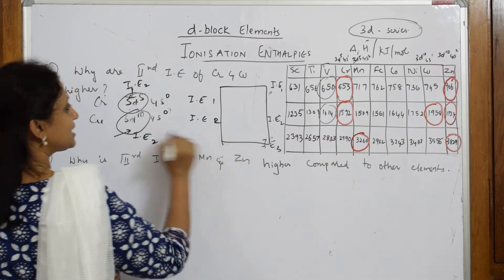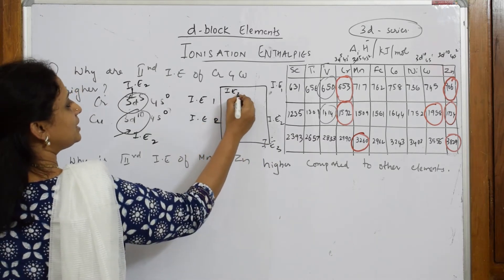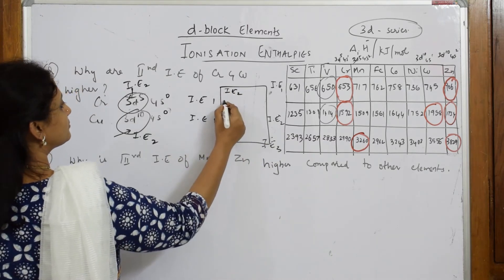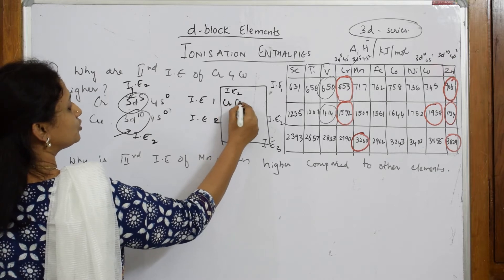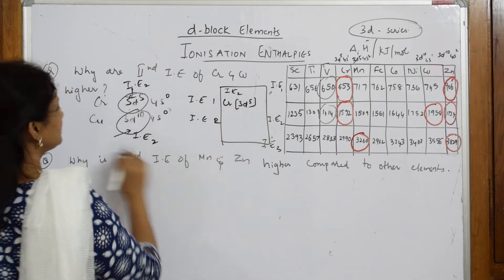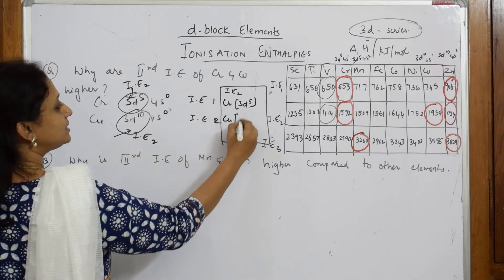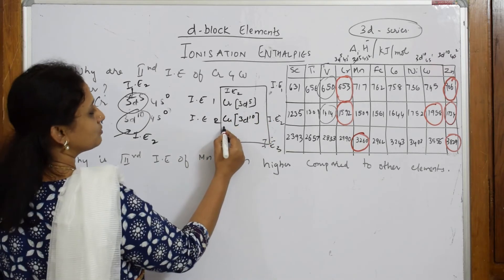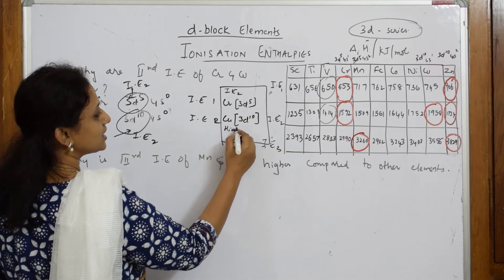So just simple, how should you write this answer? Your second ionization enthalpy IE2, that is for your chromium, you will get 3d5 configuration. For copper, you will get 3d10 configuration, so more highly stable.